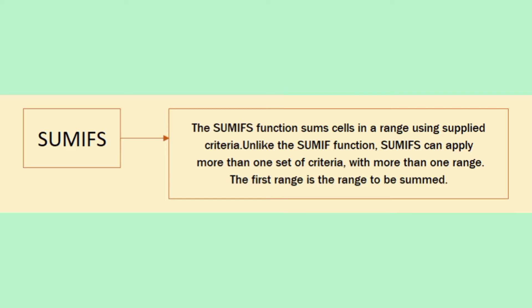The SUMIFS function sums cells in a range using supplied criteria. Unlike the SUMIF function, SUMIFS can apply more than one set of criteria with more than one range. The first range is a range to be summed.